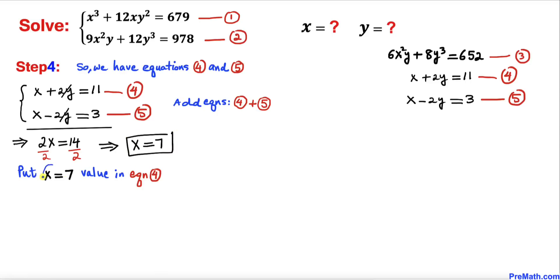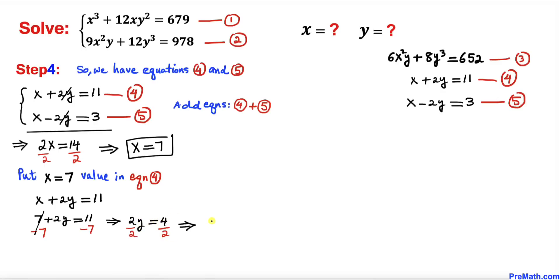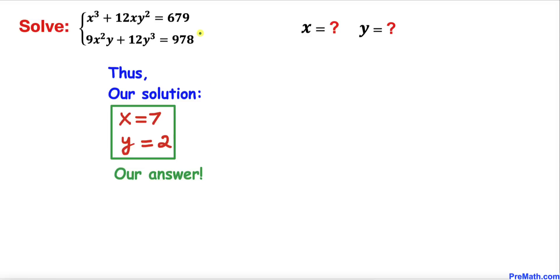Now let's substitute x = 7 into equation four: 7 + 2y = 11. Subtracting 7 from both sides gives 2y = 4, and dividing by 2 gives y = 2. So the solution to this system of equations is x = 7 and y = 2. Thanks for watching and please don't forget to subscribe to my channel for more exciting videos.